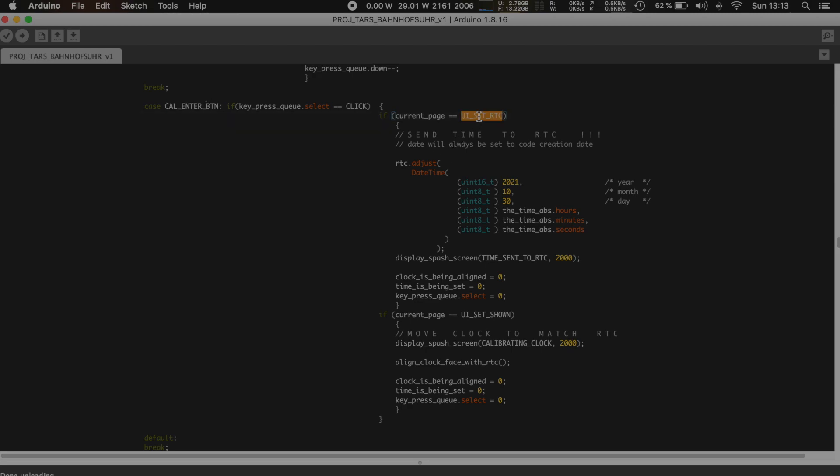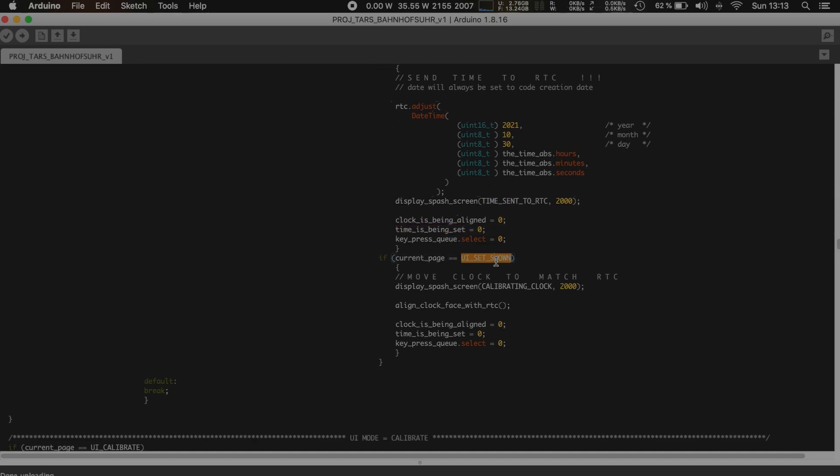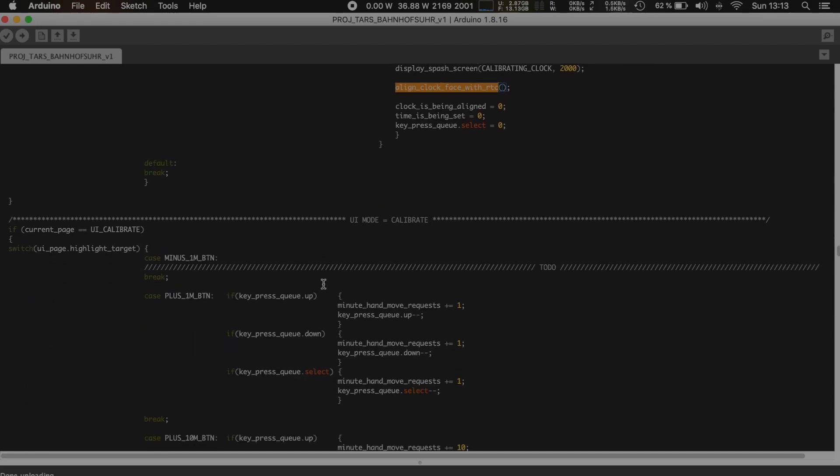Basically this is where all the magic happens. If we press the calibrate or enter button, these pages are very similar. This button will always be on the third position. We discriminate based on the page. If we're on set RTC we're gonna send the time over to the RTC. The library I'm using is the Adafruit one. Basically it likes this DateTime format. This class and the constructor looks like this: year, month, day, hours, minutes, seconds. So we send this over to the RTC module, display a little splash screen because that's always nice, and reset some variables.